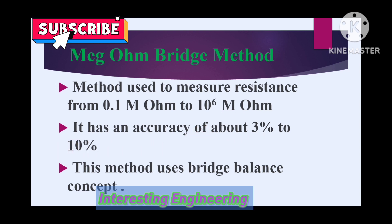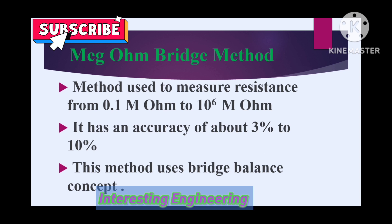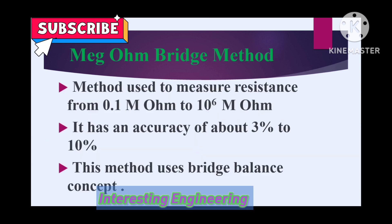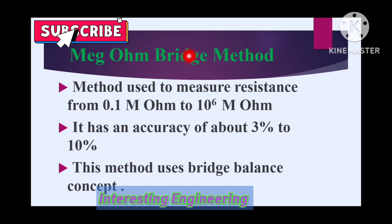While measuring high resistance in the lower end range, it has accuracy of about 3%, and for measuring high resistance values in the higher end range, it has accuracy of about 10%. As the name suggests, this is a bridge method.